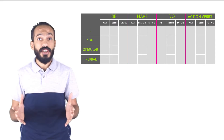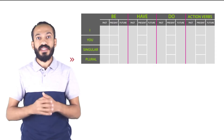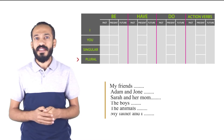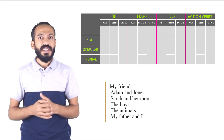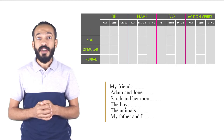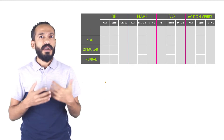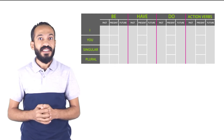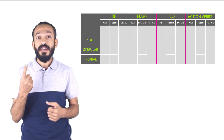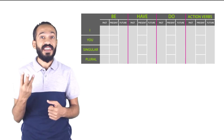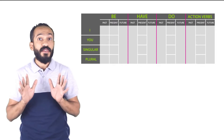Anything that is singular. The fourth category is about plural subjects, like my friends, Adam and Joan, Sarah and her mom, the boys, the animals, my father and I. Anything that is plural — more than one person, place, thing, or animal. So these are all the different types of subjects.